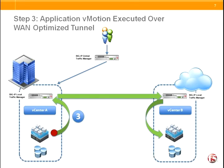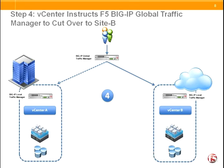The next step is to vMotion the application itself, the virtual machine, from the host in site A to site B. This happens across the iSessions tunnel and arrives at the host in site B. At this point we have storage as well as the application running in site B, and we want to communicate to F5 GTM to do the switchover of connections so that users accessing this application will now be directed to site B.